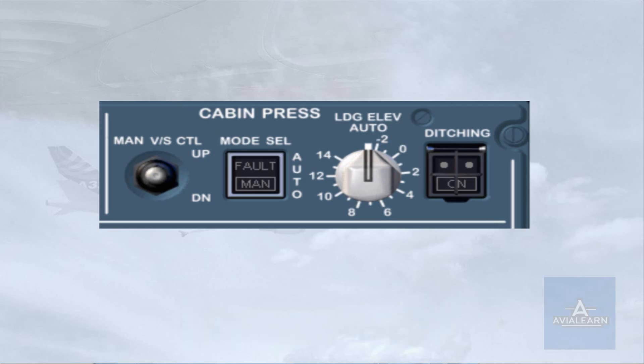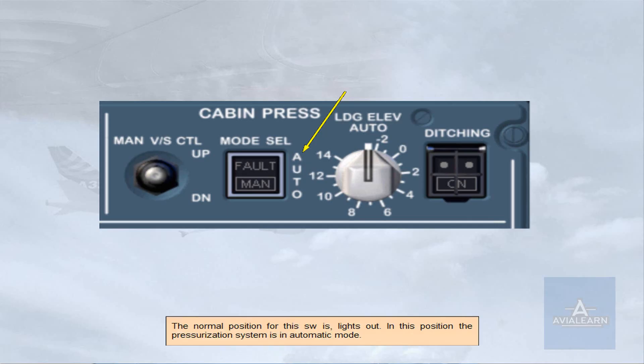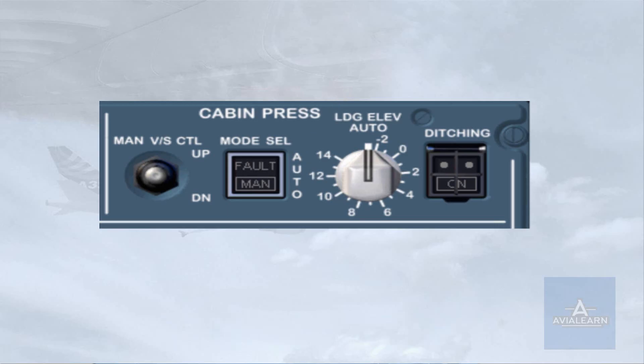The normal position for this switch is lights out. In this position, the pressurization system is in automatic mode. The landing elevation selector normally remains in the auto position. Landing elevation, which is required by the pressurization system, is then provided by the FMGS based upon the elevation of the destination airport. If the landing elevation is not available from the FMGS, then it can be set manually using this selector.